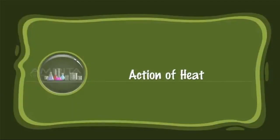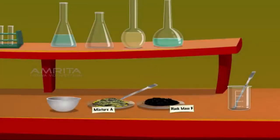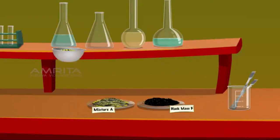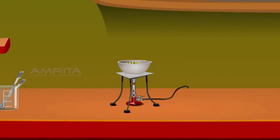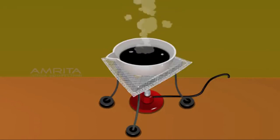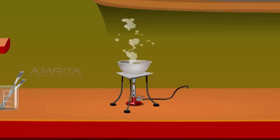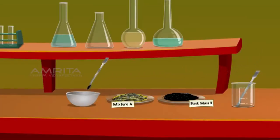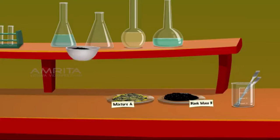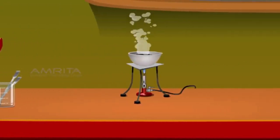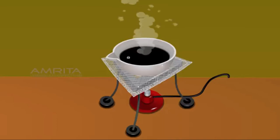Action of heat: take a small quantity of mixture A in a china dish and heat strongly — a black homogeneous mass is obtained; a compound of iron and sulphur is formed. Take a small quantity of black mass B in another china dish and heat strongly — no change is observed. The compound FeS does not show any reaction on heating.